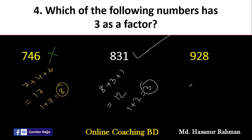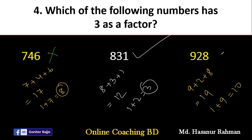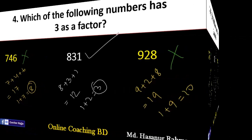At last, for 928, just add 9 plus 2 plus 8. 8 plus 2 is 10, 10 plus 9 is 19. Adding 1 and 9 gives 10. 10 cannot be divided by 3. So 928 is not divisible by 3. Our final answer is: 3 is not a factor of 928. That is a very easy question.